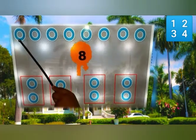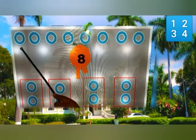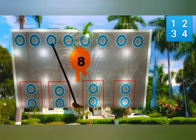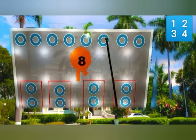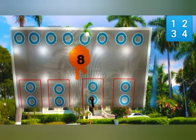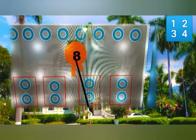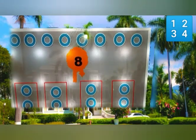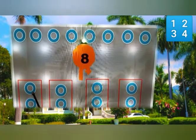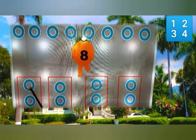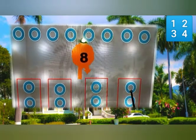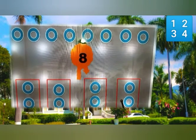We have some circles. We are going to count them. One, two, three, four, five, six, seven, eight. There are eight. Let's divide them by two. Here's a group of two, here's a group of two, here's a group of two, here's a group of two. We don't have any left.